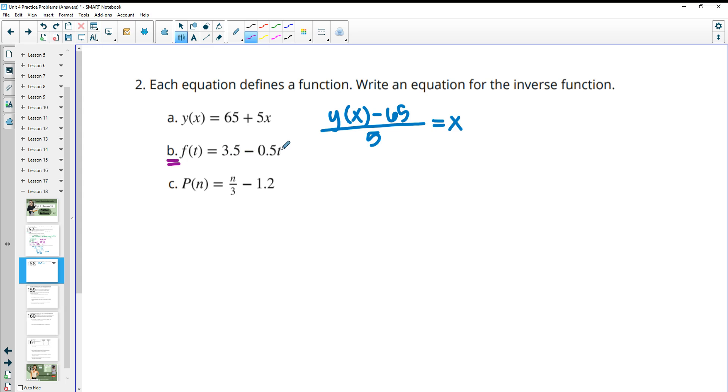For B, if we plug a number in for T, we'd be multiplying by negative 0.5, then adding 3.5. So we're going to subtract 3.5 first from our function. Then we're going to divide by the negative 0.5. And that's going to solve us for T.